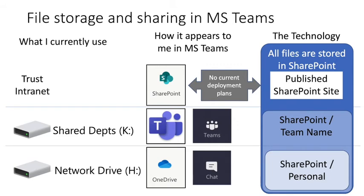File storage and sharing in MS Teams can be quite confusing, so let me go through the different functions. What we currently use are network drives: H drives, which are personal drives; shared department drives such as K drives or I drives; and the trust intranet. In Teams, these become OneDrive - where the personal drive is the equivalent of OneDrive, and when you have a chat, you can only share files from OneDrive. The shared department drive corresponds to the Teams function, so each team has its own folder. The trust intranet could be put on SharePoint, though at the moment there are no plans to do that. The underlying technology is the same throughout the program.